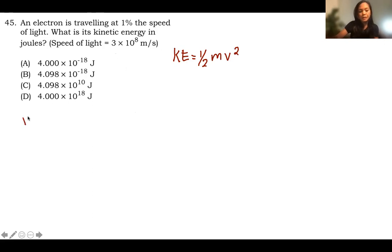It says there that the velocity is 1% of the speed of light times 10 to the 8 meters per second. And let's just write it 0.01 for the 1%, 3 with 8 zeros.